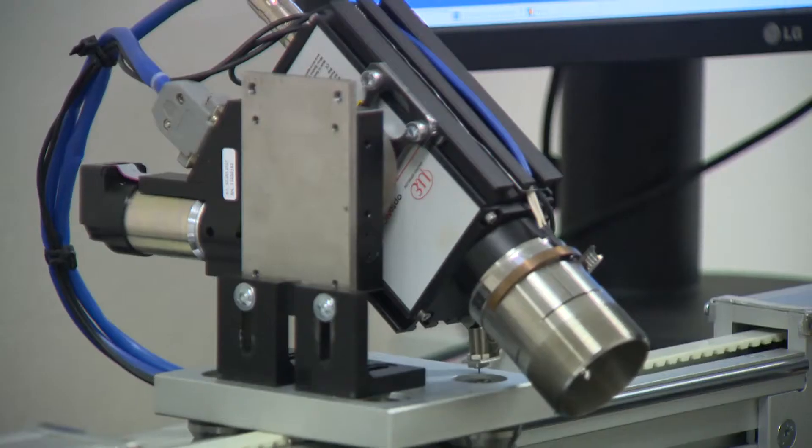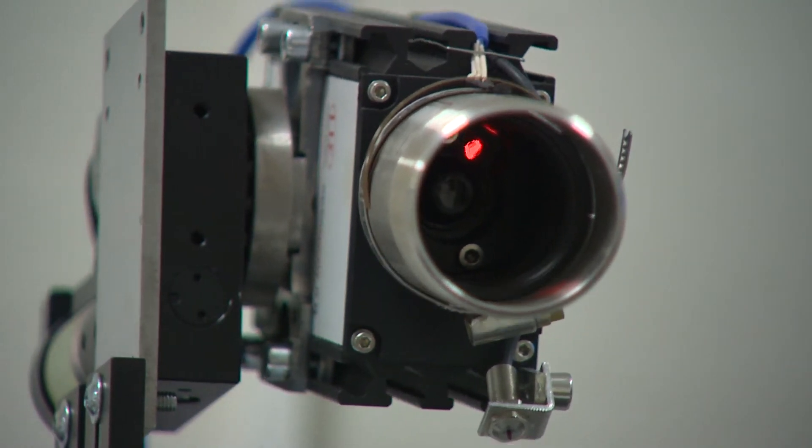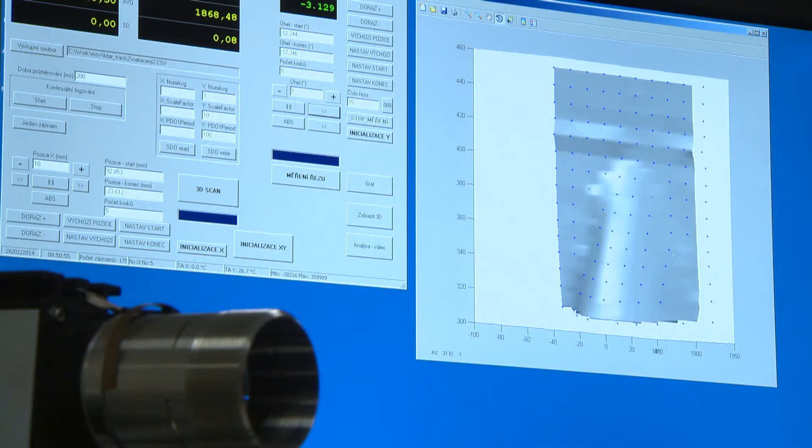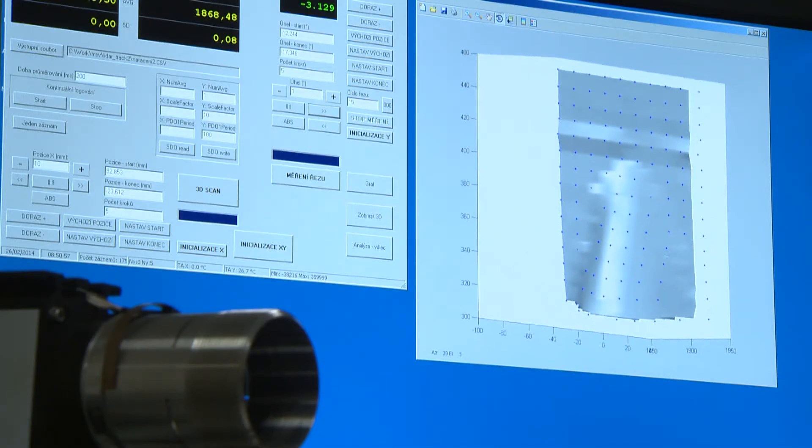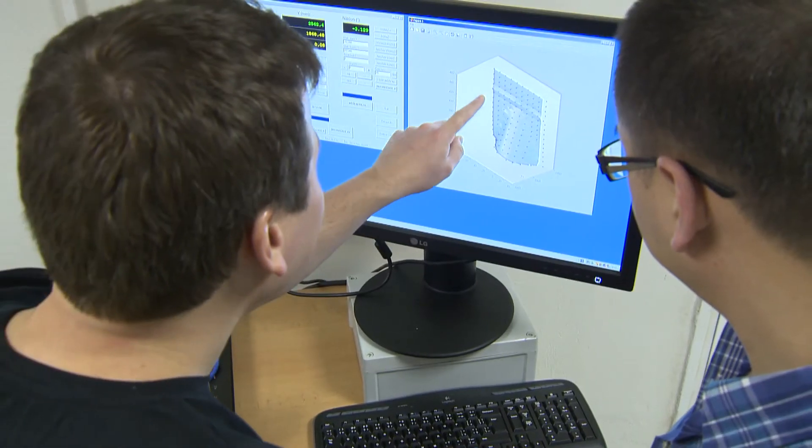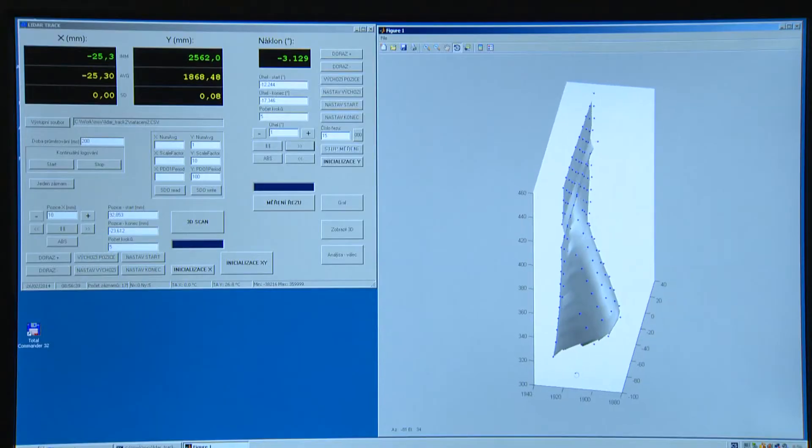Laser light is reflected from objects with high surface temperature, for example hot forgings or ship propeller shafts. In our institute, we've developed a precise laser meter, with which we are able to measure the shape of such objects with an accuracy of one millionth of a meter.